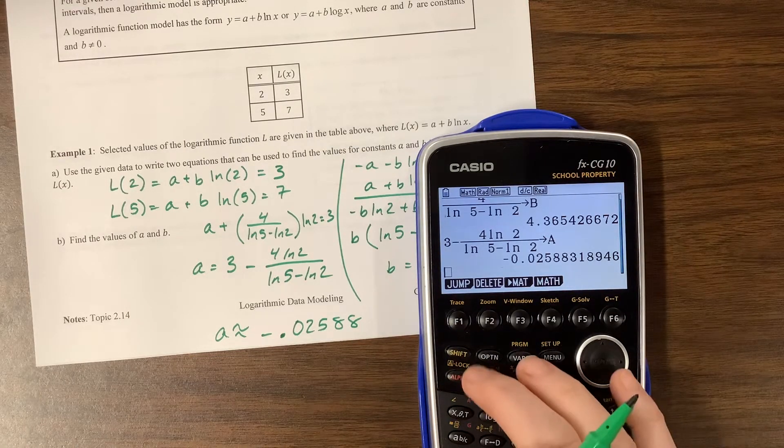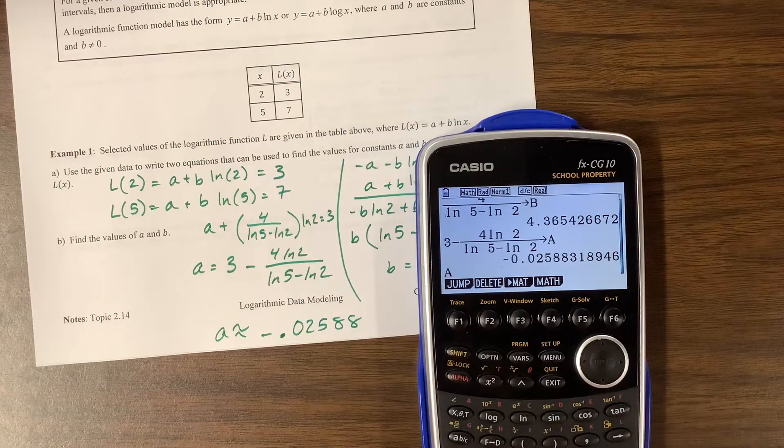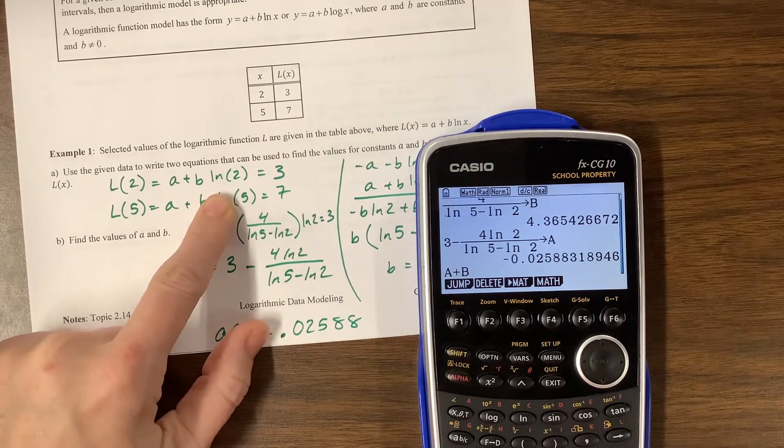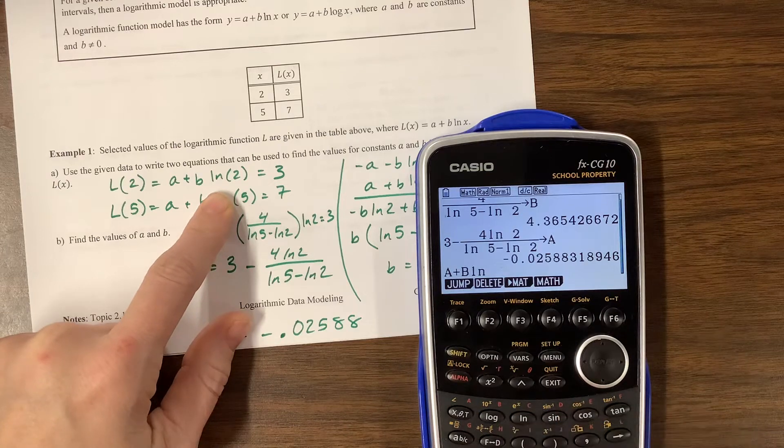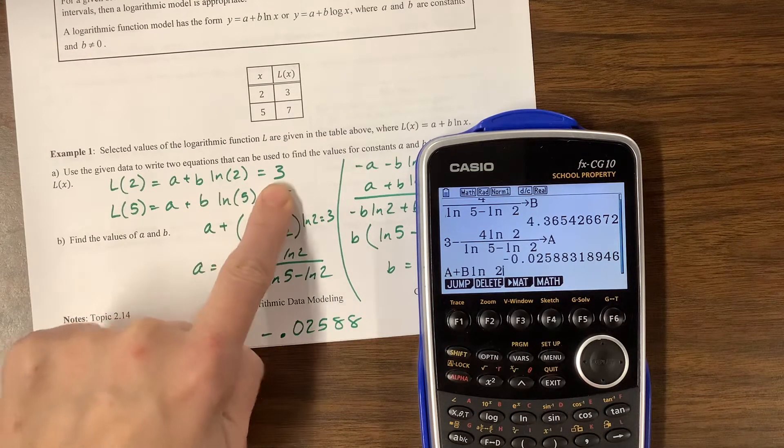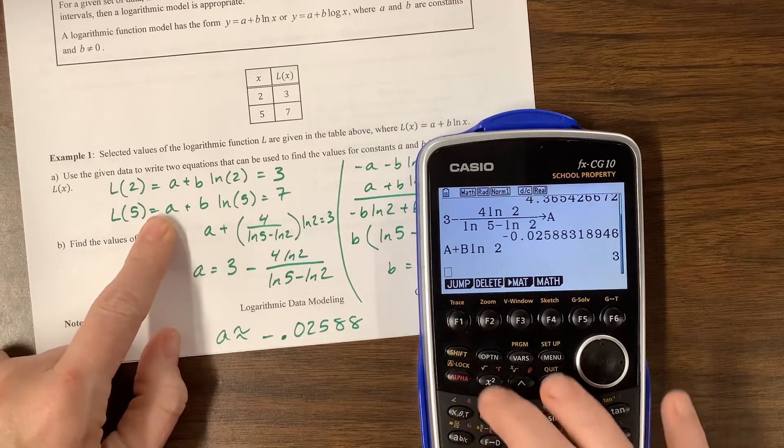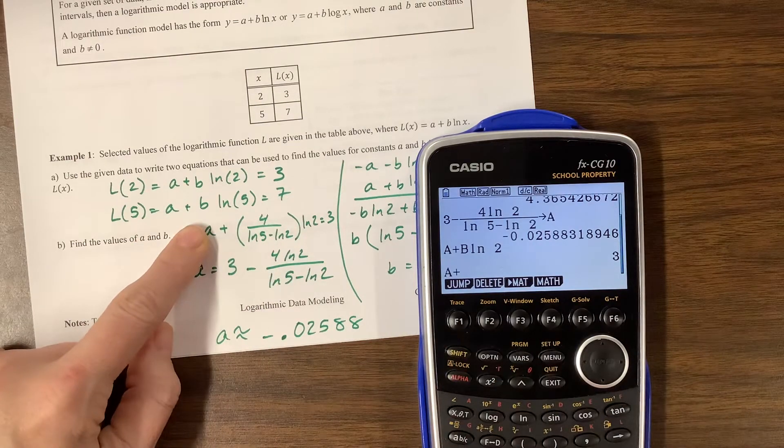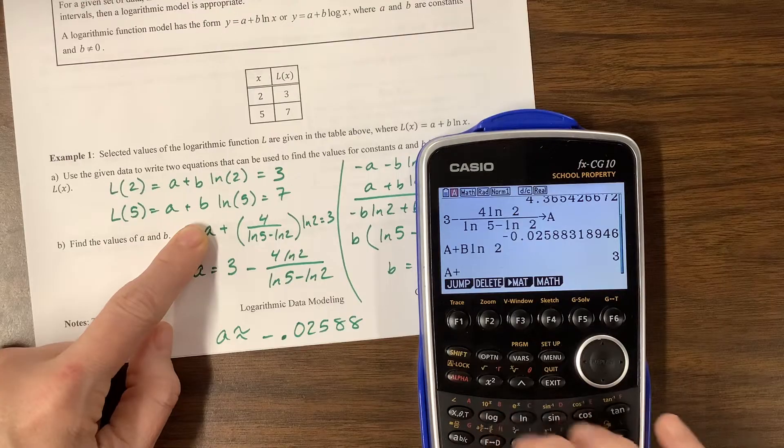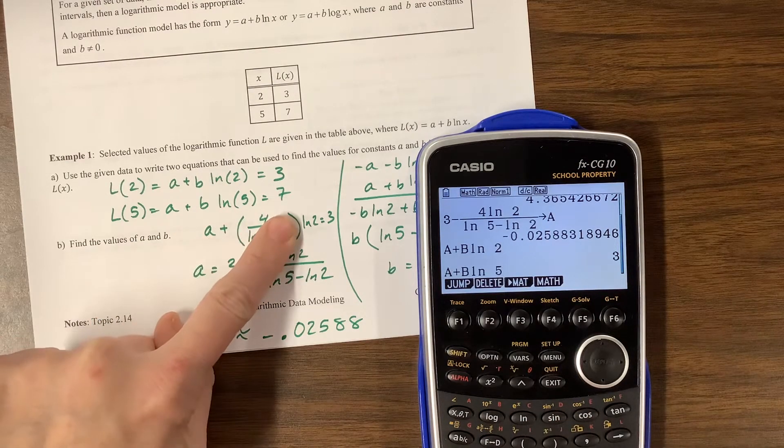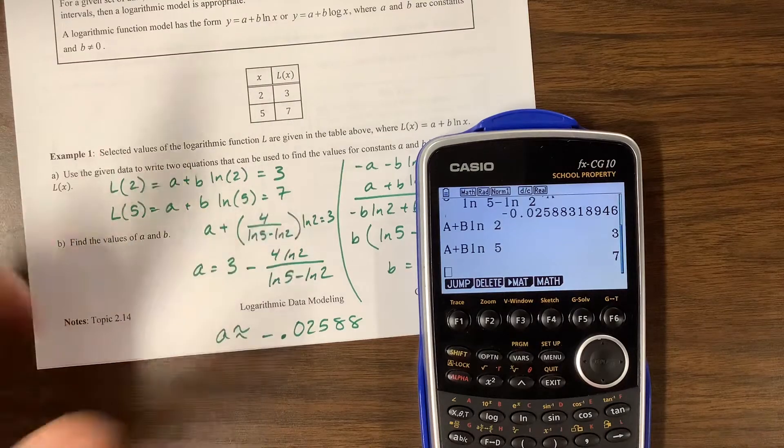I can double check by saying I can check my work and say A plus B times the natural log of 2. If this doesn't equal 3, then I've messed up. Oh good. And then I can say A plus B times the natural log of 5, and this better equal 7. And it sure does. That's a good sign.